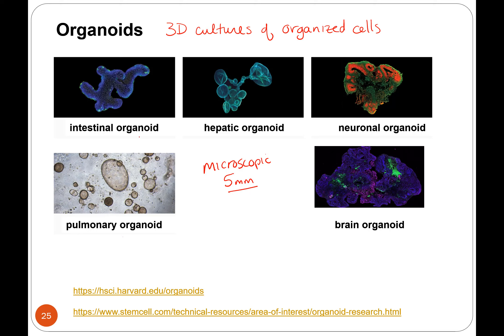You've got lungs, gut, liver, and this is supposedly a mini-brain — the neurons and the brain. So organoids — kind of cool.